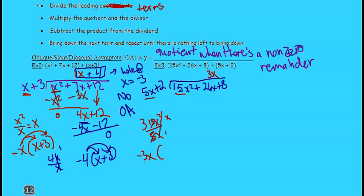Okay, now we're going to multiply negative 3x times our divisor, 5x plus 2. So we have negative 15x squared minus 6x. Combine these, you get 0 here, and then you get 20x. Bring down the plus 8. And then repeat the process again.